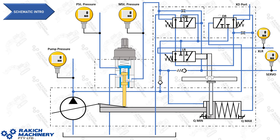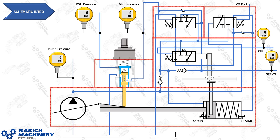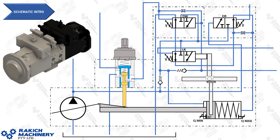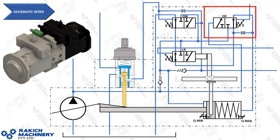I'll introduce the schematic I'll be using to explain the functionality. All the housings bolted together to form the pump are indicated by the dotted lines. All the pressures we'll be reading and using today: servo pressure on the right-hand side, XLR also on the right, PST up on the top left, MST center top, and your pump outlet pressure over on the left. Here are the valves and their positions on the schematic: the PST valve, the DW valve, the DR valve, and the LR valve.